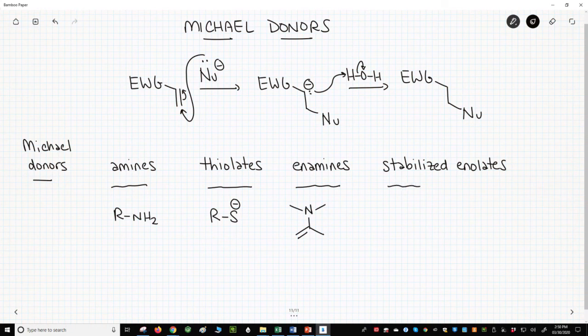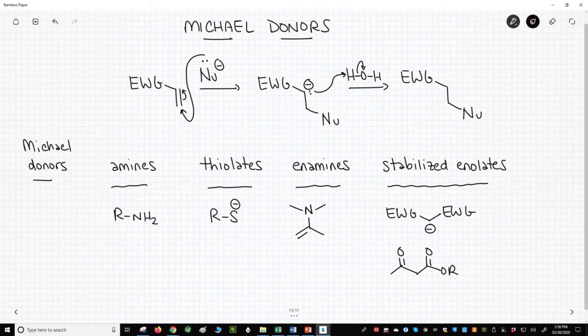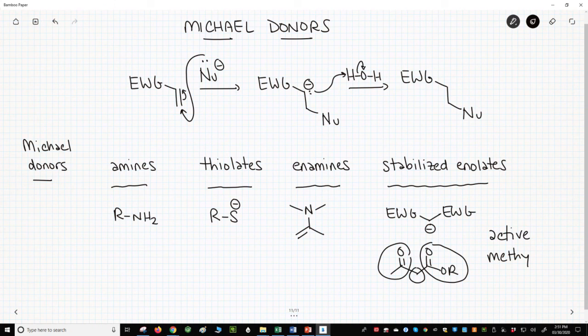Enamines and stabilized enolates. These are carbanions with two electron withdrawing groups, one on either side of a carbon. These carbanions are easily formed by deprotonation of molecules like beta-keto esters, which can be made through the stork enamine acylation. Structures with a CH2 between two EWGs, in this case a ketone and an ester, are called active methylene compounds. They tend to form highly stabilized enolates.